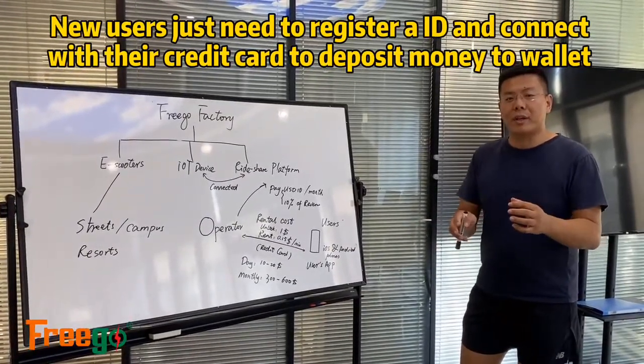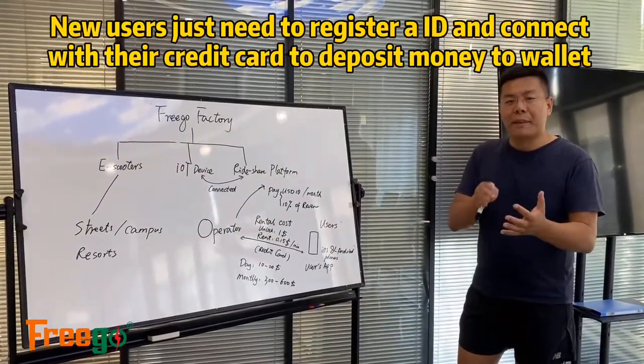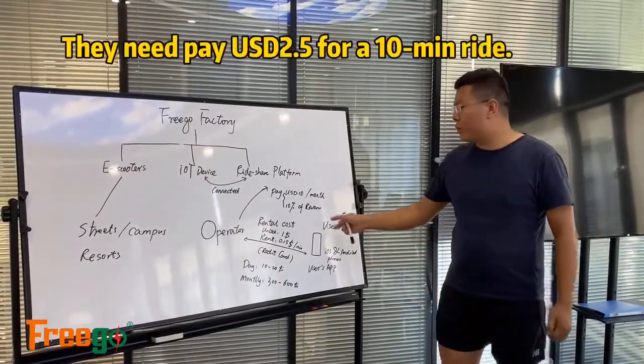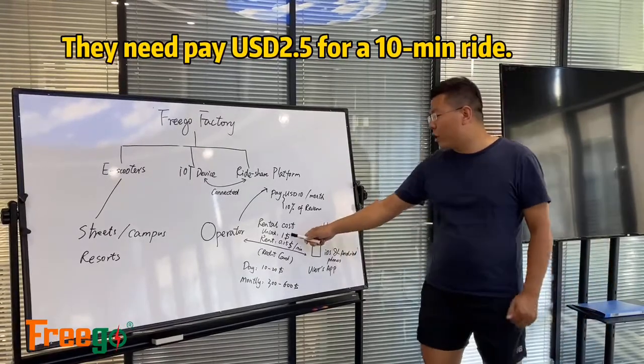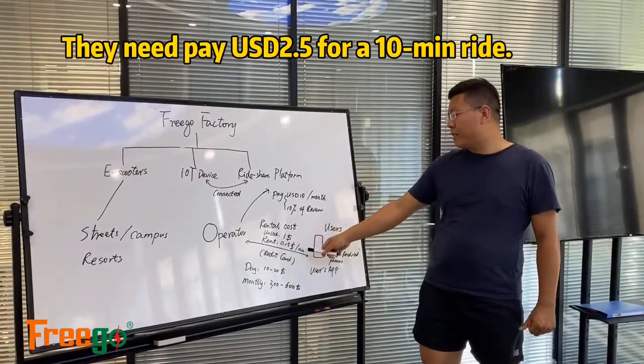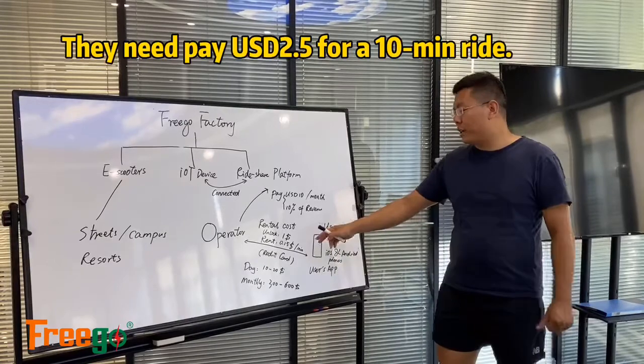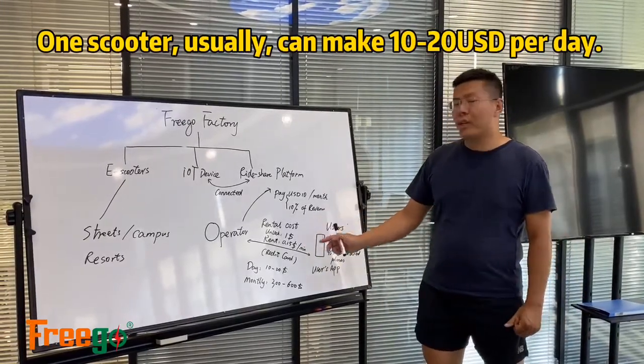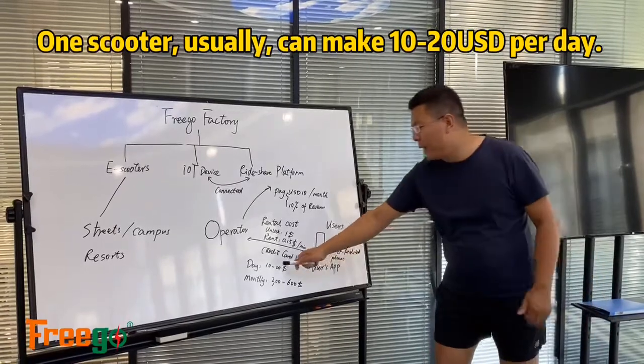And connect with your credit card or PayPal so that they can pay you money when they rent your scooter. So unlock one dollar, rent 15 cents per minute. And you can change the prices. And every day one scooter can make you $10 to $10.